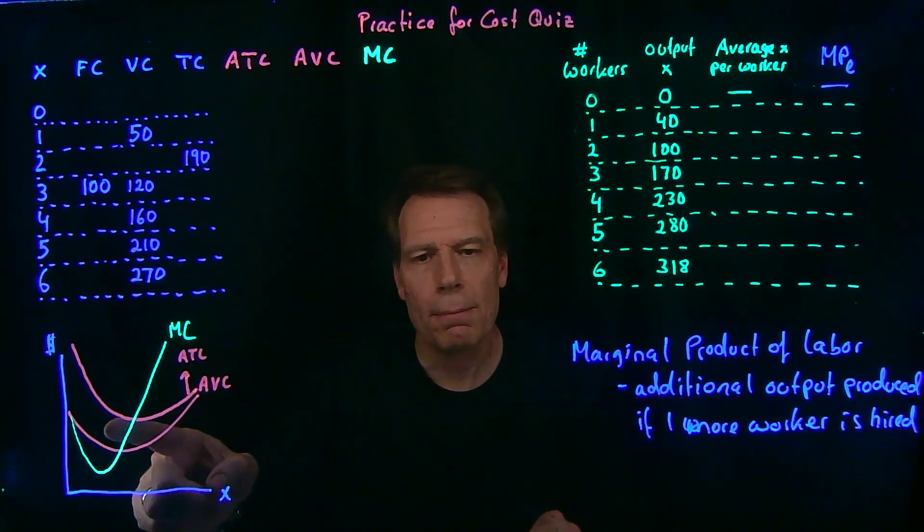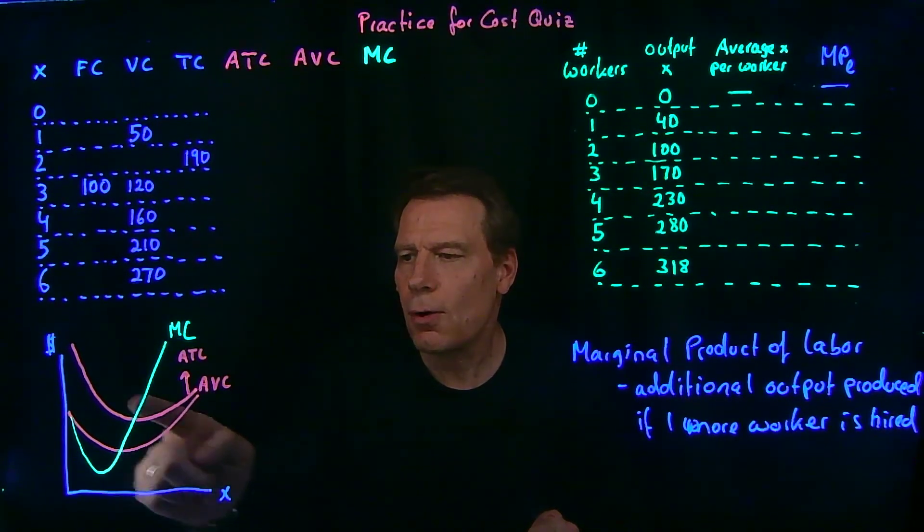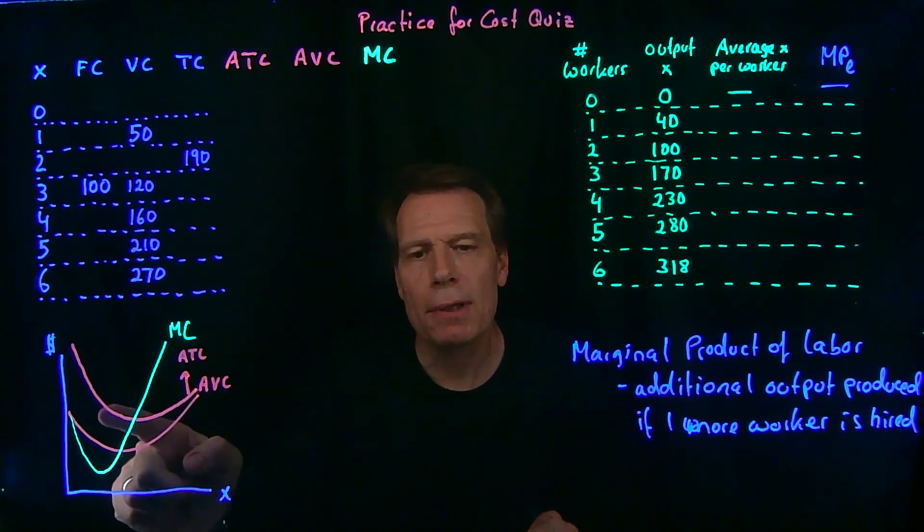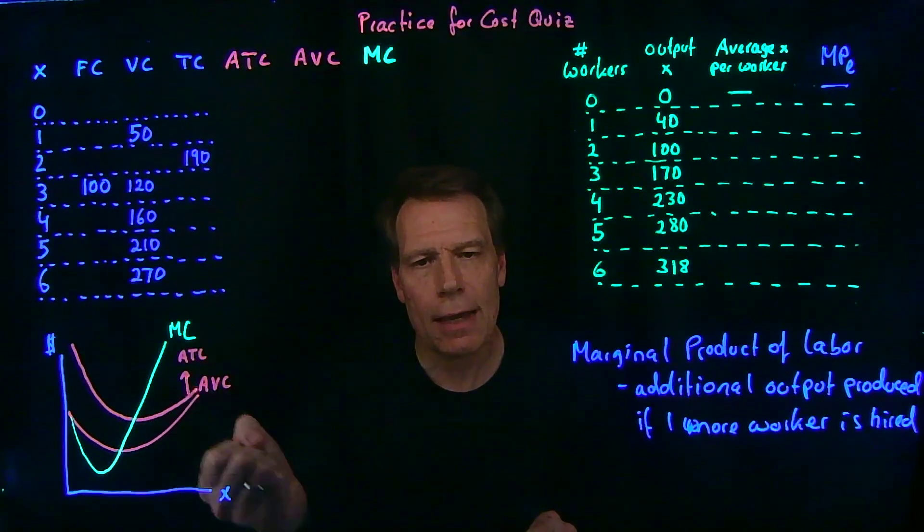The same thing was true for marginal and average costs. The only way the average costs could be downward sloping, could be falling, is if the marginal costs were below the average to drag that average down.